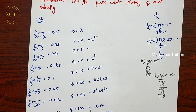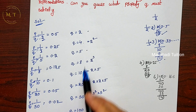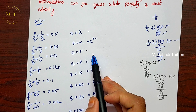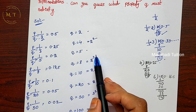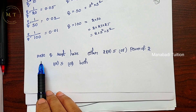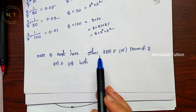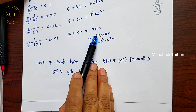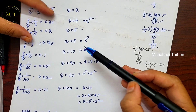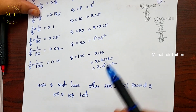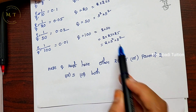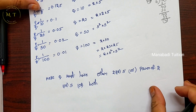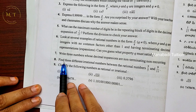So the property that q must satisfy for a terminating decimal is: the denominator must have only 2, only 5, or both 2 and 5 as prime factors. In other words, q must be of the form 2^m × 5^n. That's the answer to Question 6.